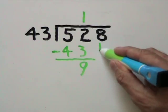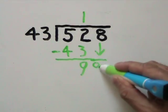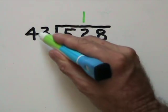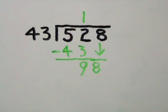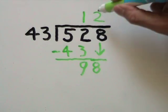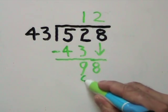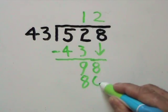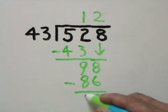We then bring down the third digit in our dividend, the 8, and ask ourselves, how many times does 43 go into 98 without going over? We know it goes in twice. We put our 2 directly over our 8, take the 2, multiply it by 43 to get 86. We subtract 86 from 98 and we're left with 12.